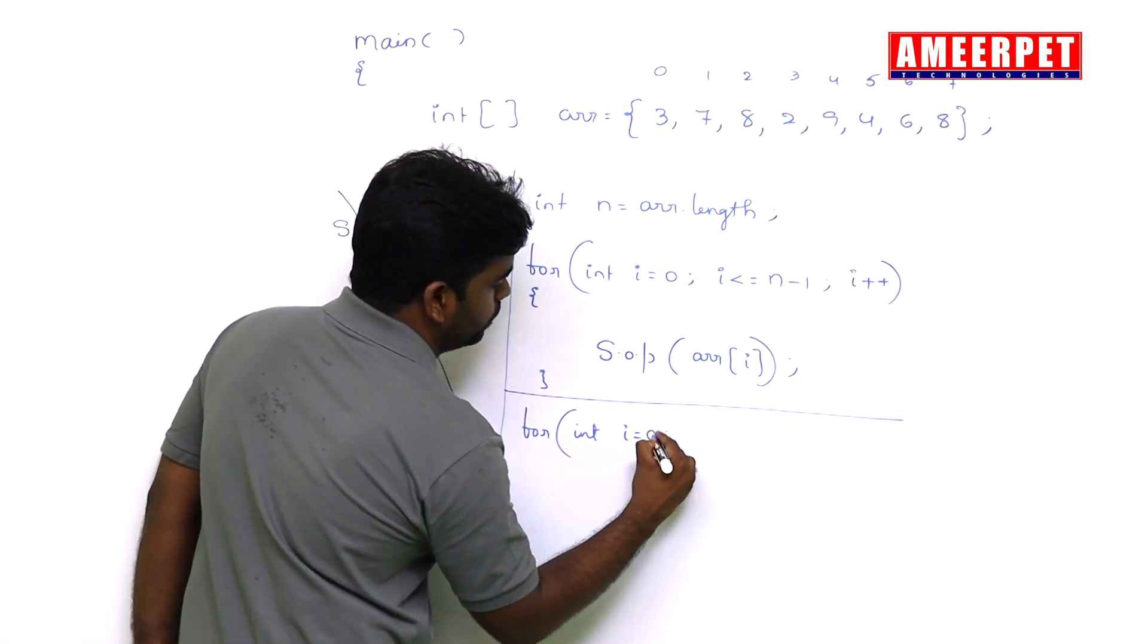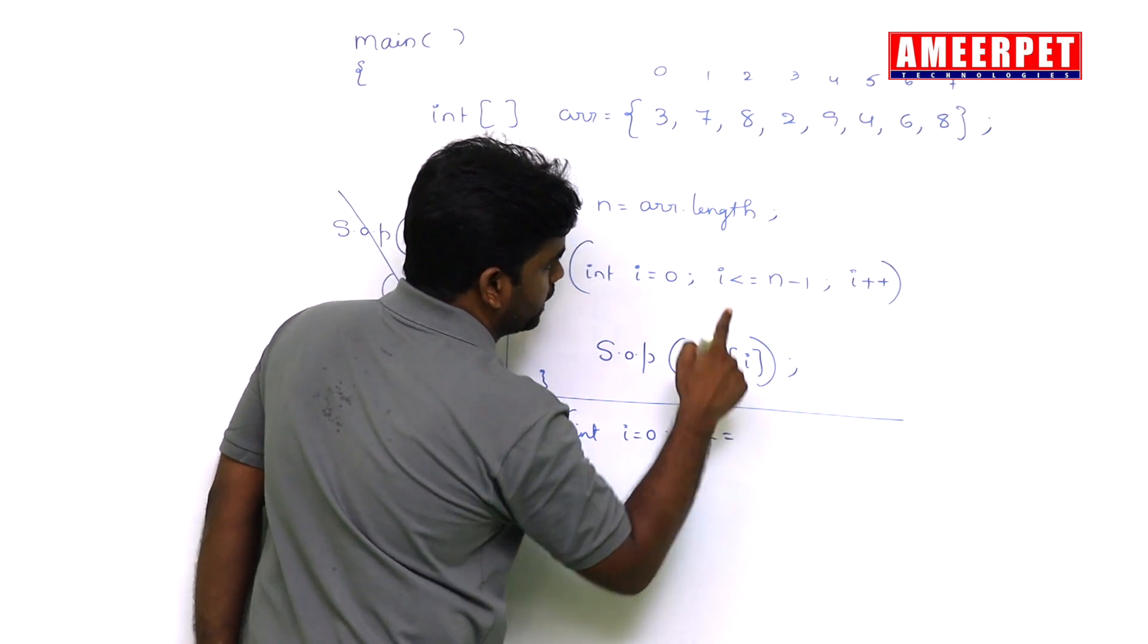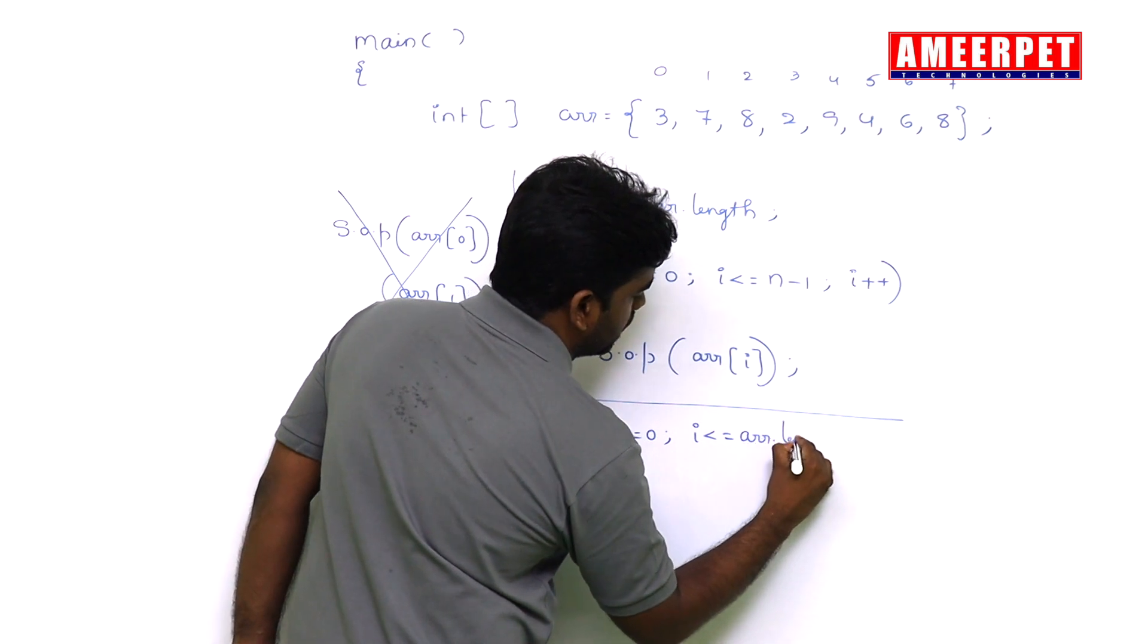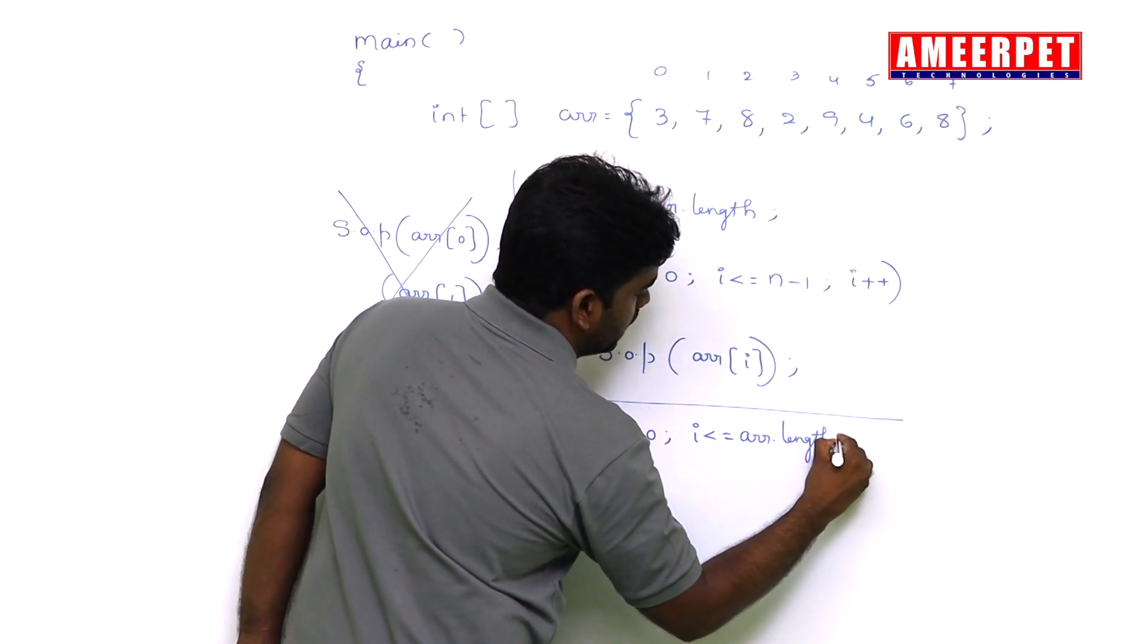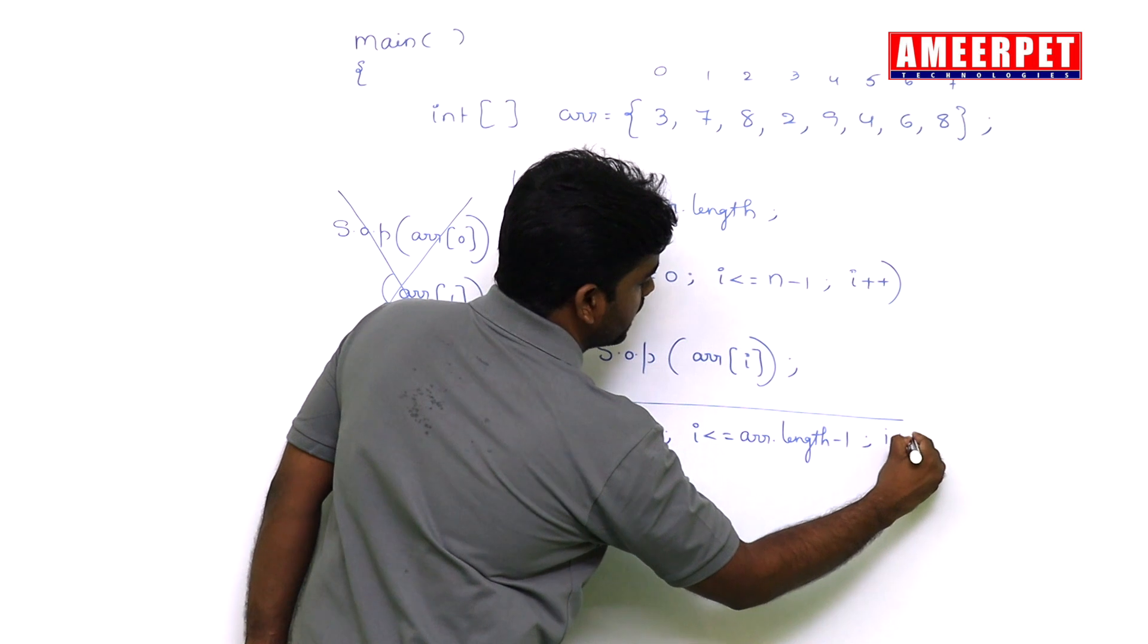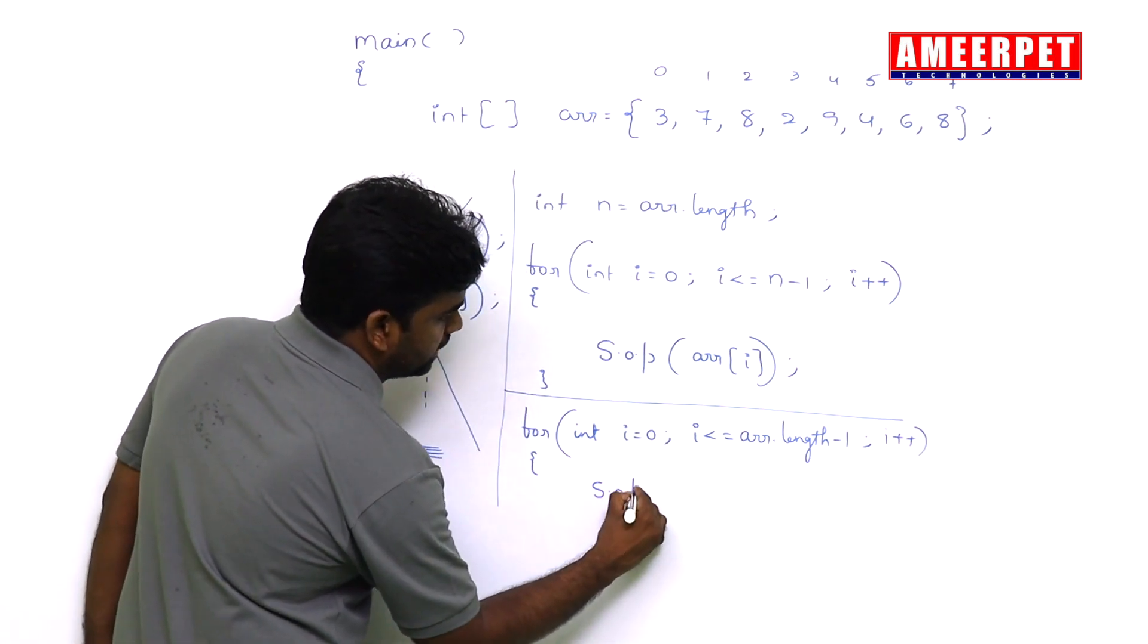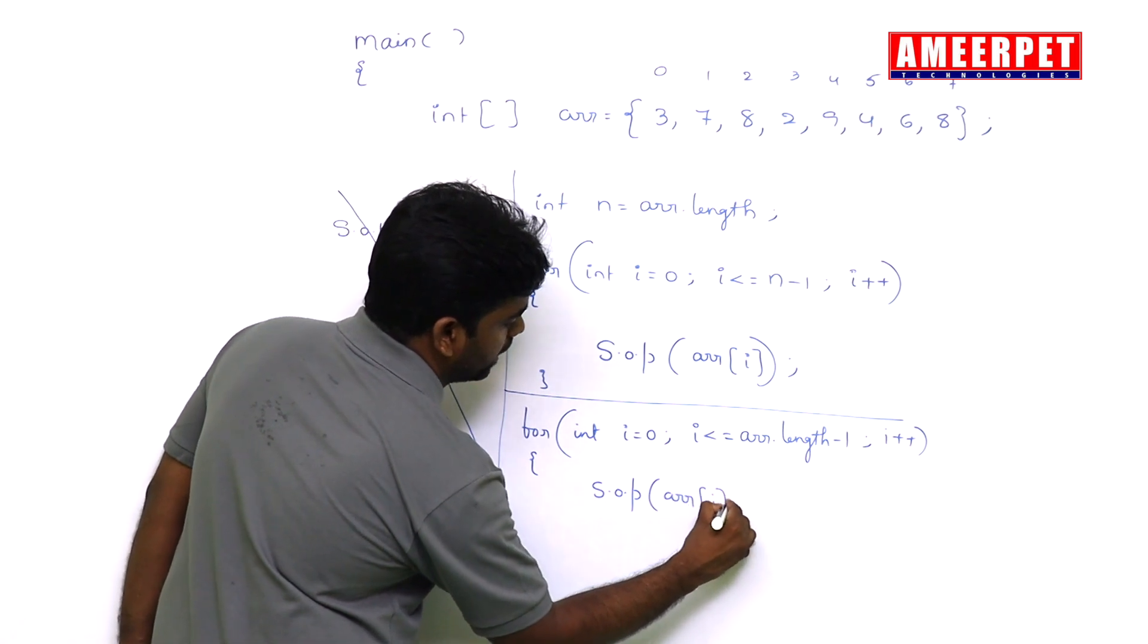For int i = 0, i less than or equal to, in place of n use this length directly: ar.length minus 1, i++. Inside that, printing that value ar[i].